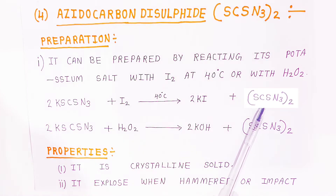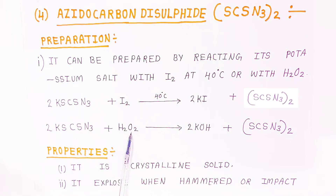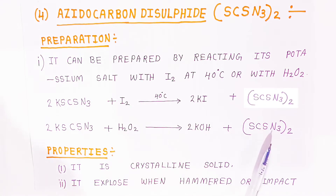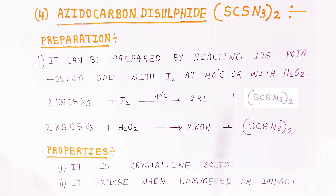When the potassium salt of azido disulfide reacts with hydrogen peroxide, it forms potassium hydroxide and azido carbon disulfide. So these are the two methods by which you can prepare azido carbon disulfide.